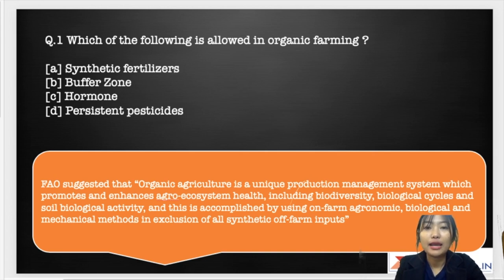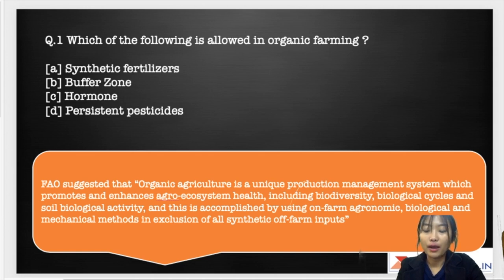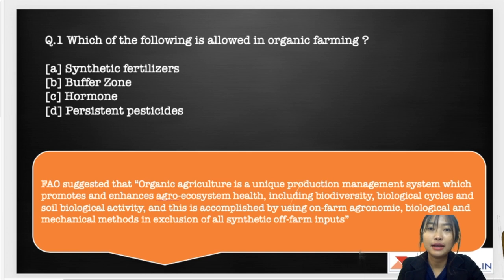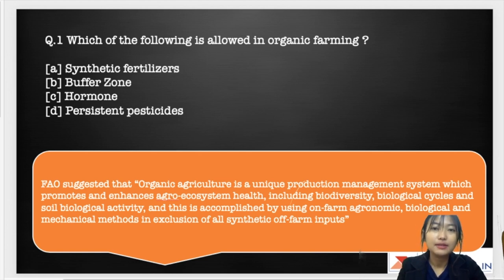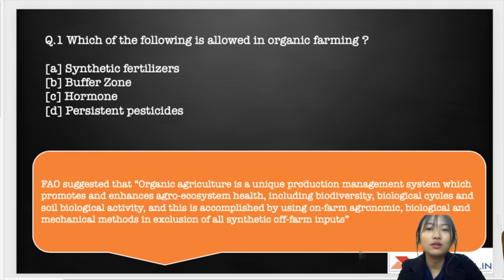Basically, organic farming is a farming system which aims at cultivating the land and raising crops in a way that helps in maintaining soil health by using all biological and mechanical methods, with no use of chemical fertilizers or pesticides, to enhance sustainable production with the most effective eco-friendly strategies. It's a natural alternative to conventional farming with a lesser detrimental effect on the environment.